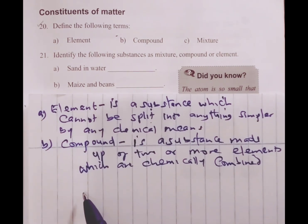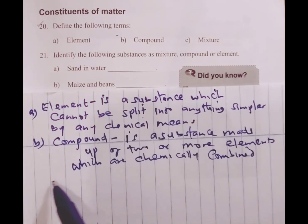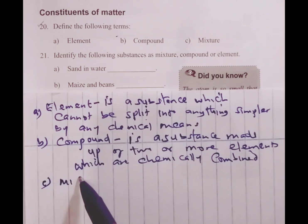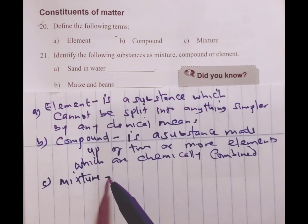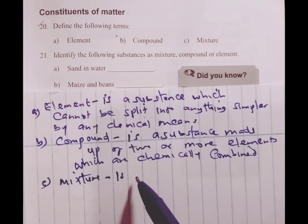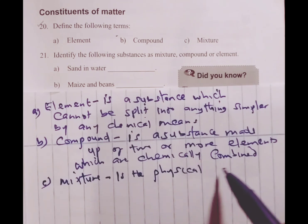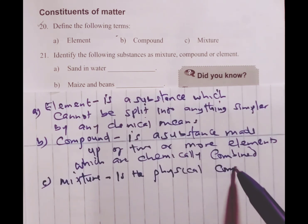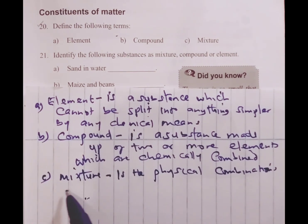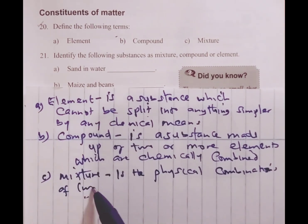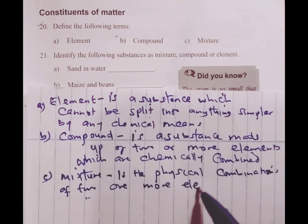Then we go to C. We define a mixture, which we have always defined. A mixture is defined as the physical combinations of two or more elements or compounds.